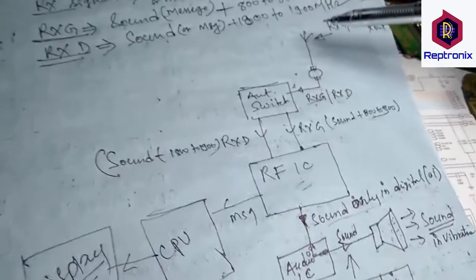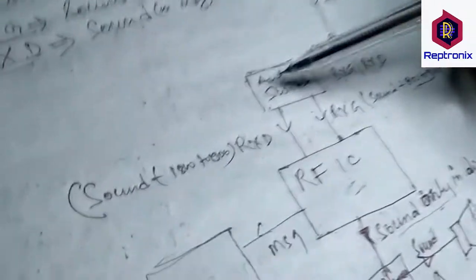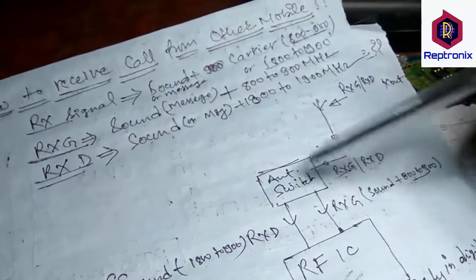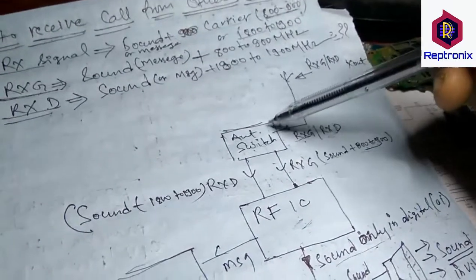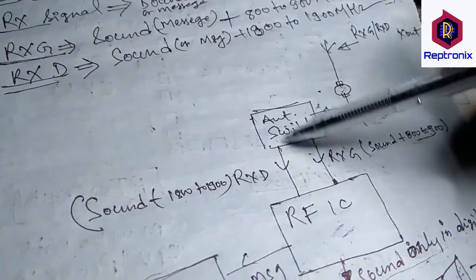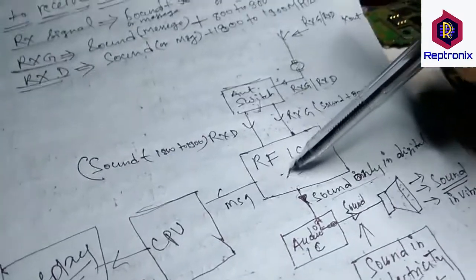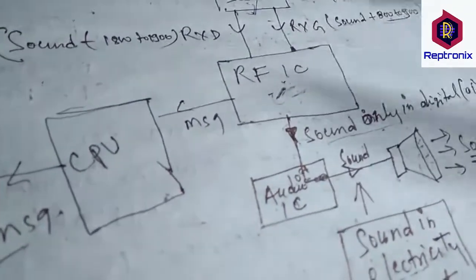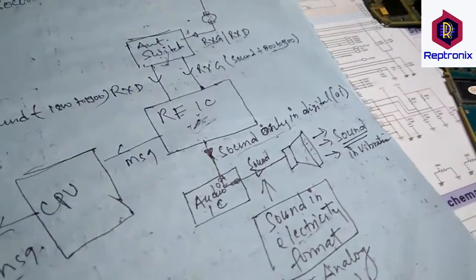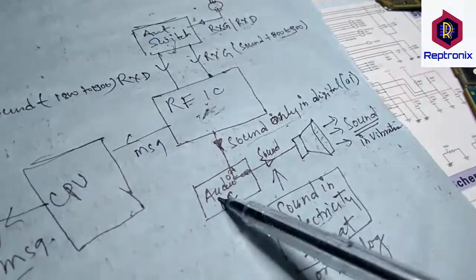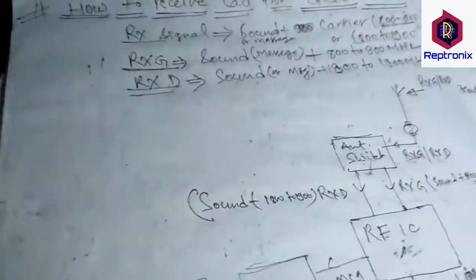So this is the process by which we receive signals on a mobile device. If you think your network is a problem or there is a fault in the antenna, then signals from outside will not be able to enter the network. If there is a fault in the RFIC, you will not be able to hear properly. If there is a fault in the audio IC, then the sound will not come from the speaker. If the main IC is dead, the mobile may be completely dead or half-sorting will fail and the mobile will not power on.